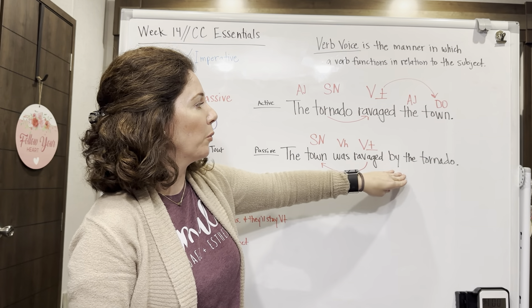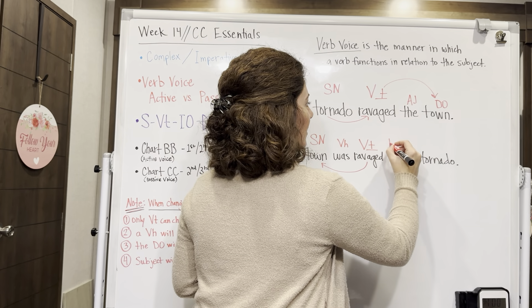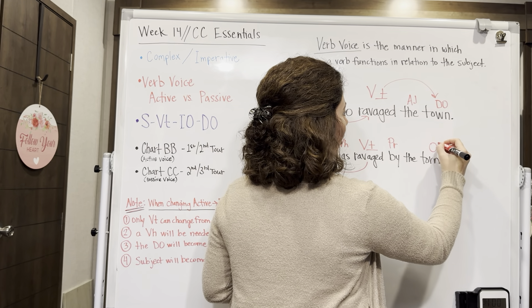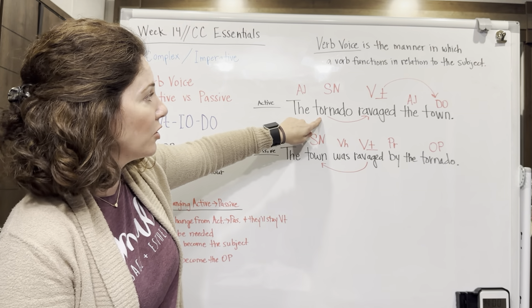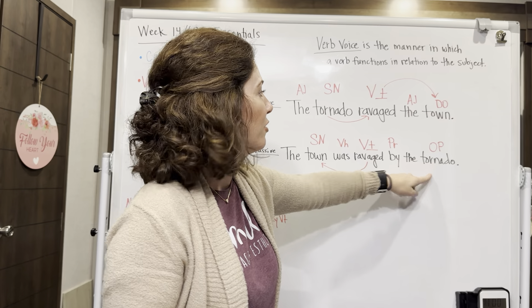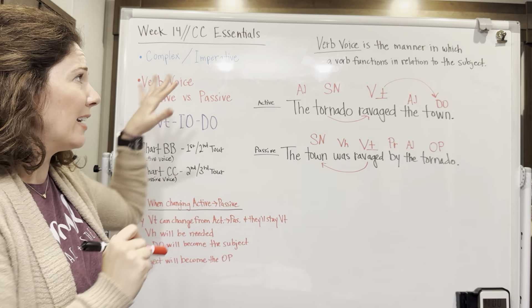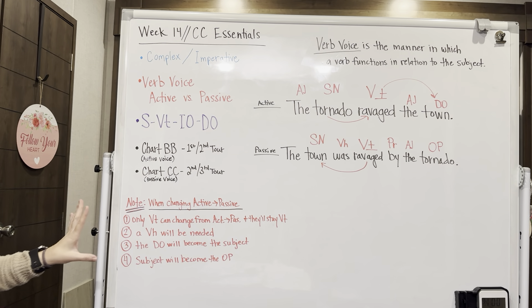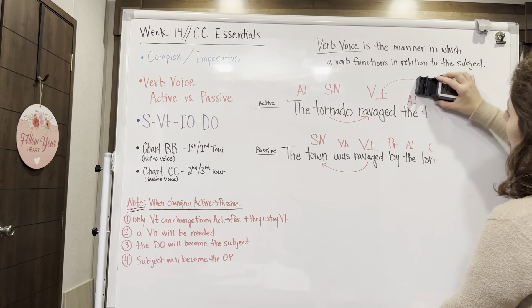We also have the word 'by' — that's a preposition, so 'by the tornado' is a prepositional phrase. 'Tornado' is the object of the preposition, and 'the' is an article adjective describing which tornado. Our original subject, 'tornado,' has become the object of the preposition. Those are our rules and guidelines when changing from active to passive voice. Now we're going to look at our review for complex sentence structure and imperative purpose.